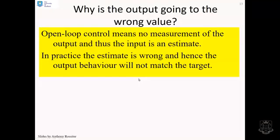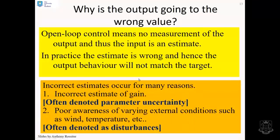Open-loop control means no measurement of the output and thus the input is an estimate. In practice, the estimate will be wrong and hence the output behaviour will not match the target. Incorrect estimates can occur for many reasons. Incorrect estimate of gain, which is often denoted parameter uncertainty. Poor awareness of varying external conditions such as wind, temperature and so on, which are often denoted as disturbances.